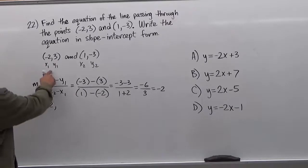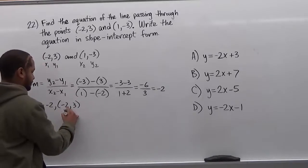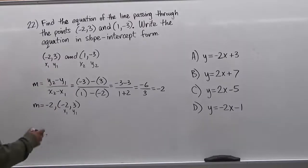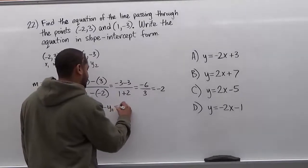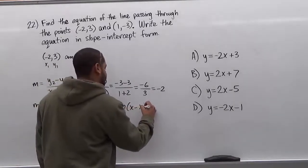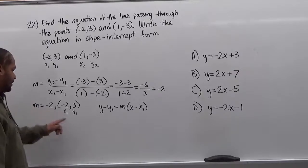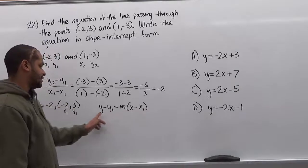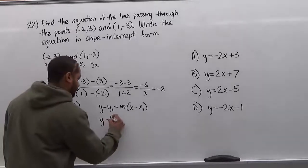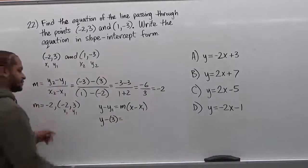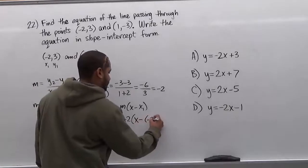We're going to pair this slope with the first coordinate, negative 2 and 3. We're using the point-slope formula to find the equation of the line. The point-slope formula is y minus y1 equals m times x minus x1. We insert the values: y minus 3 equals negative 2 times x minus negative 2.